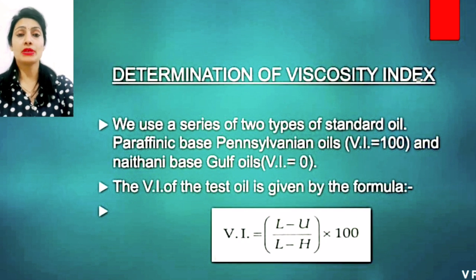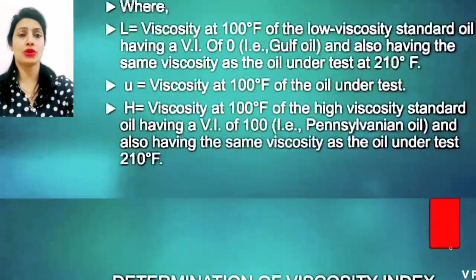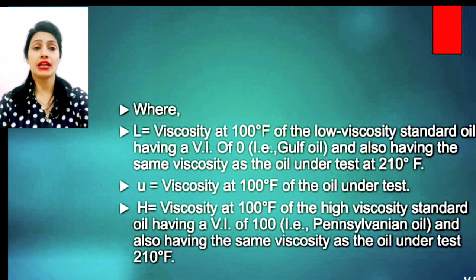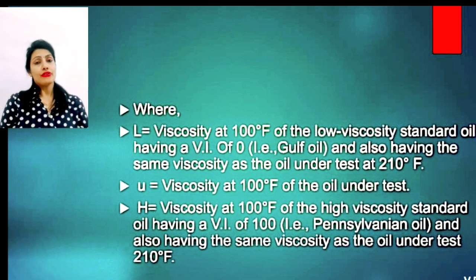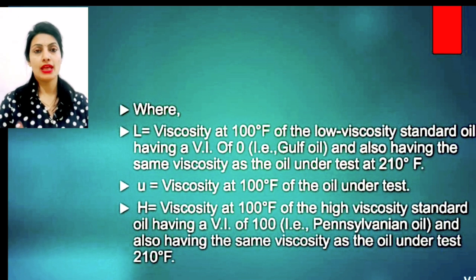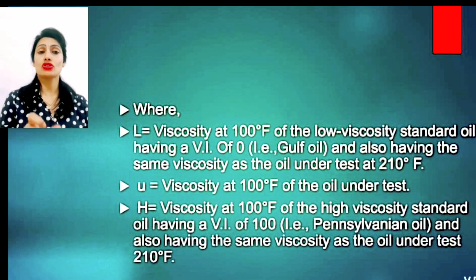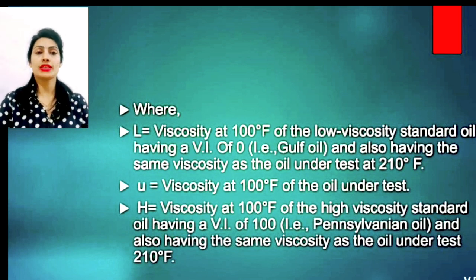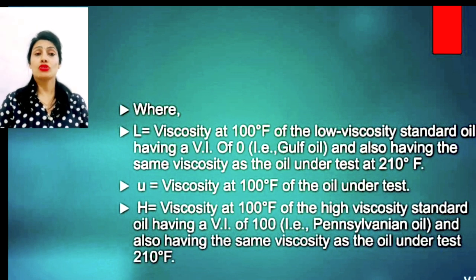The Viscosity Index formula is: V.I. = (L − U) / (L − H) × 100. Here, L is the viscosity at 100°F of the low viscosity standard oil having a viscosity index of 0 — that means Gulf oil — and also having the same viscosity as the oil under test at 210°F. L stands for Low Viscosity Standard Oil.